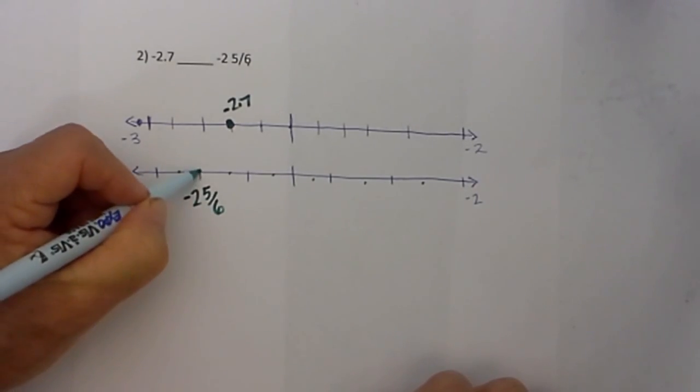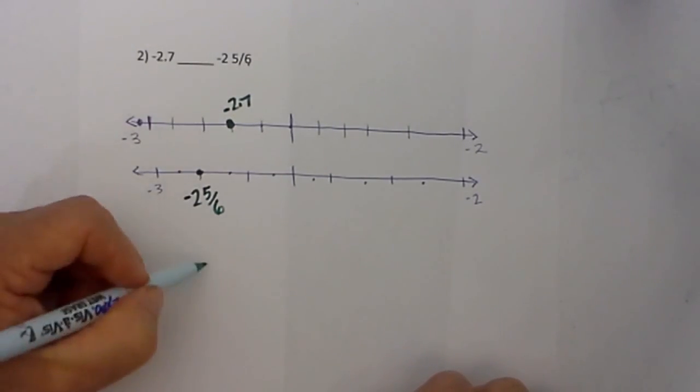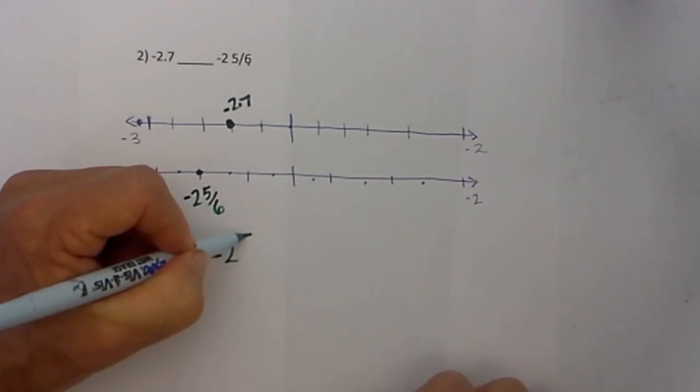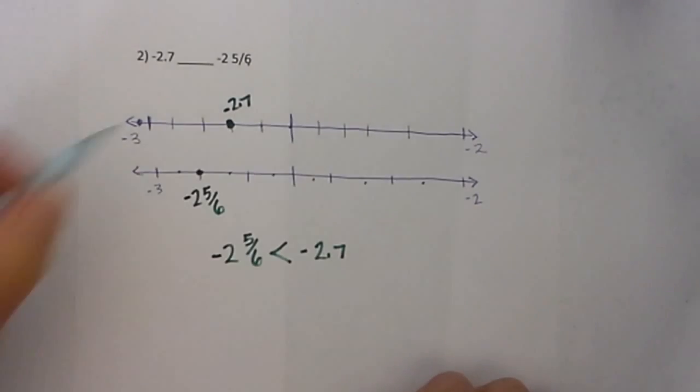So it is further to the left than negative 2.7, so I will rewrite it like this: negative 2 and 5 sixths is less than negative 2.7.